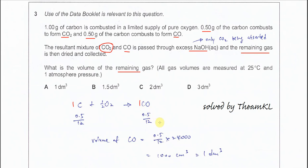After that, we use this mole times the molar volume. You can use 24,000 cm³ or 24 dm³. If you use 24 dm³, then you straight away get 1 dm³. So the volume of remaining gas, the CO gas, will be 1 dm³. That's all, thank you.